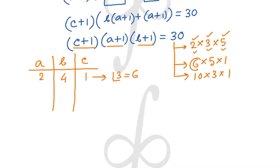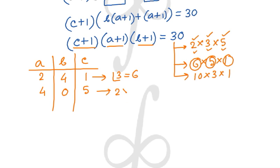For the second case, 6 × 5 × 1: C+1 = 6, A+1 = 5, B+1 = 1, giving C = 5, A = 4, B = 0. Here 0 cannot be the leading digit of the three-digit number, so the first place has 2 possibilities (4 or 5), the second place has 2 possibilities, and the third has 1. That gives 2 × 2 × 1 = 4 arrangements.